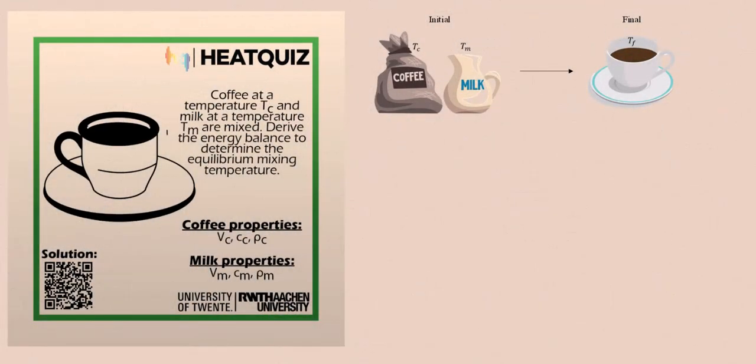Here we have an example of two separate elements, coffee and milk, each at their respective temperature, which are eventually mixed to reach an equilibrium mixing temperature. And we are asked to derive the energy balance.